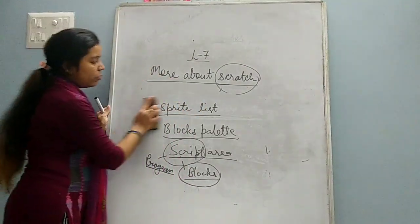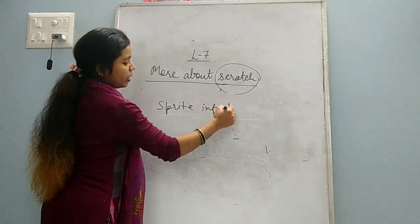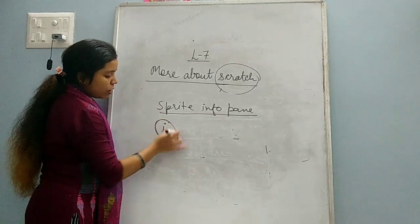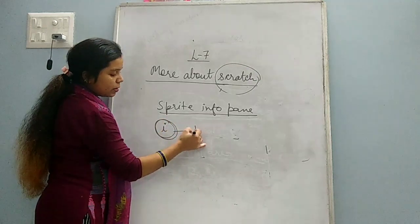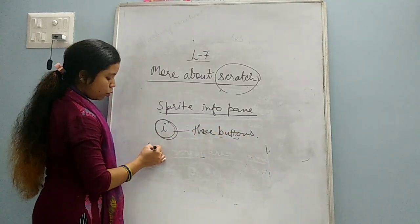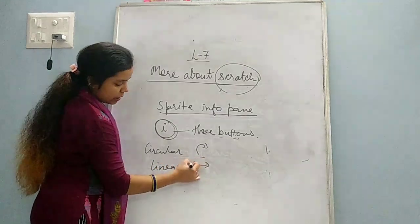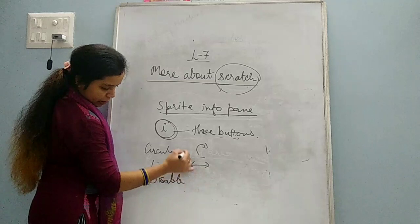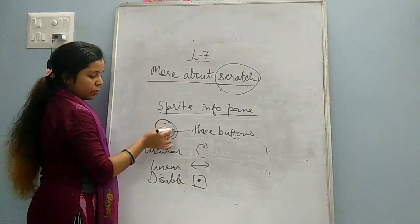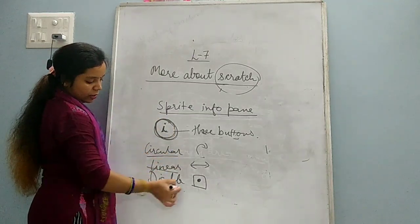Next one given in your book is Sprite Info Pane. What is this Sprite Info Pane? This Sprite Info Pane is simply one button. When we click on this button, it has three more buttons. One is a circular arrow button, one is a linear arrow button, and one is disable rotation.